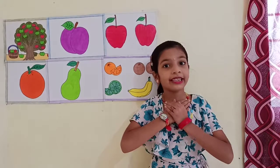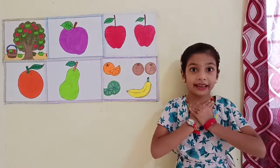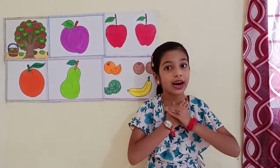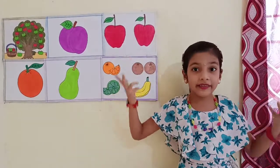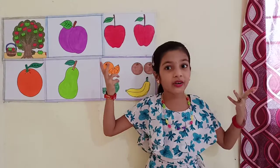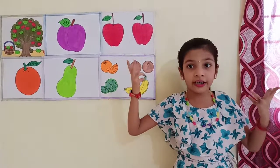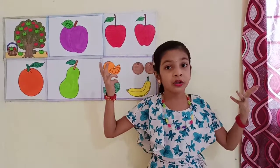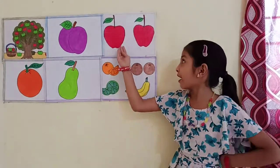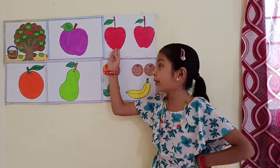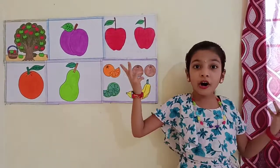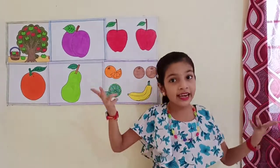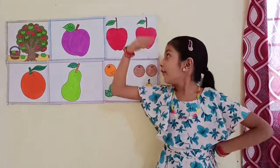Hi friends, my name is Malasvi Sharma. Kids, today we are going to learn a poem called 5 Red Apples. Come on, let's sing along.